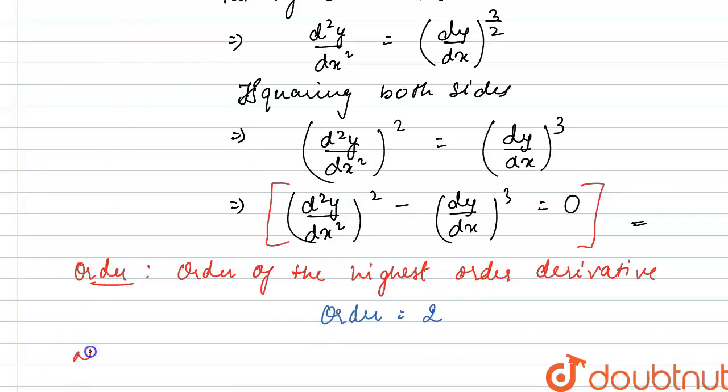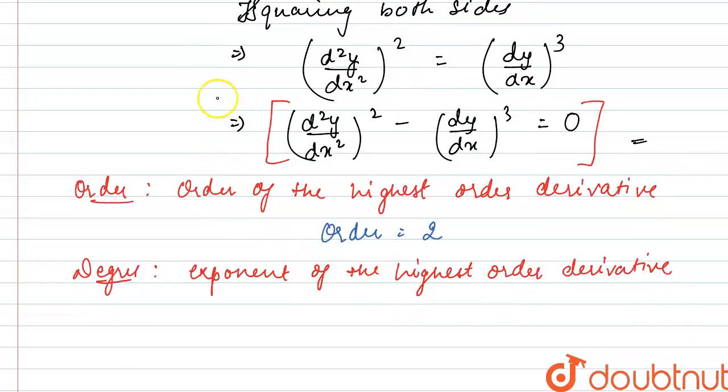Now, degree. Degree of a differential equation is defined as the exponent of the highest order derivative in the differential equation. In this differential equation, the highest order derivative is d2y by dx square, and the exponent of this derivative is 2. So degree for this differential equation is 2.